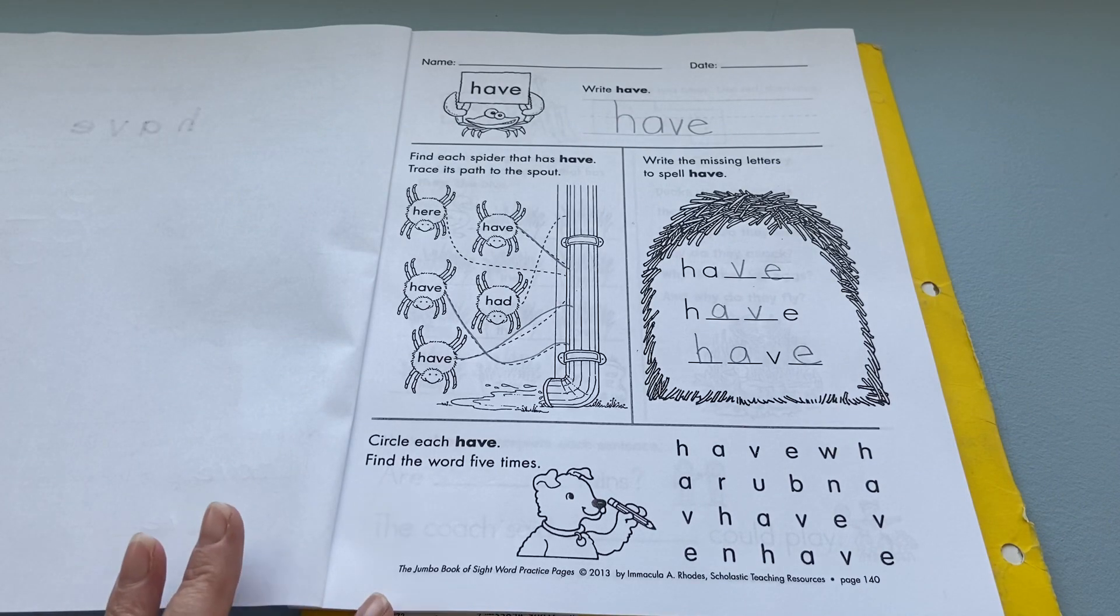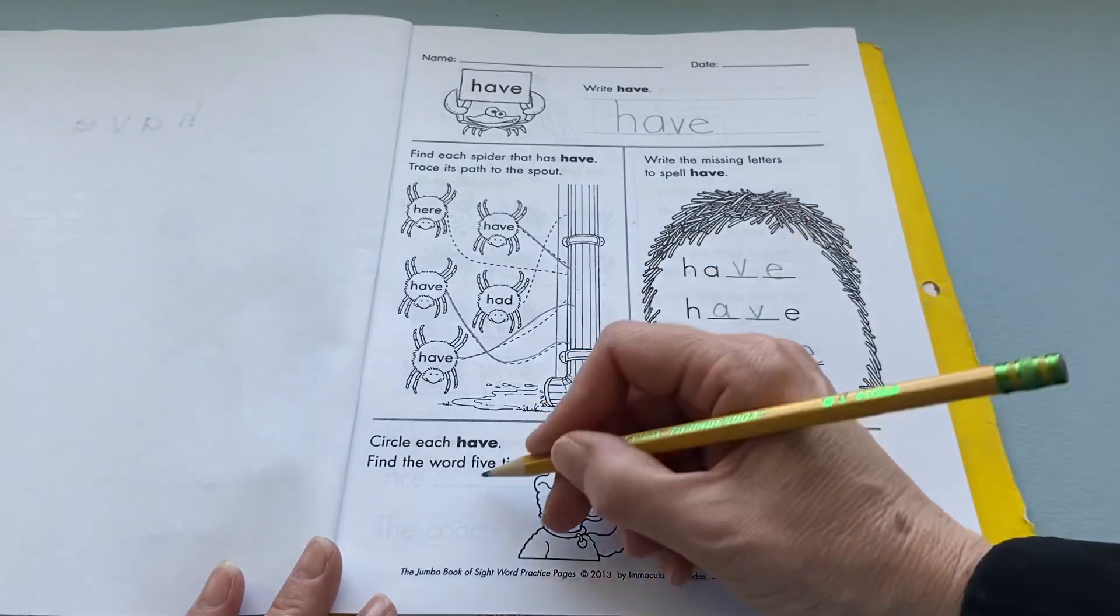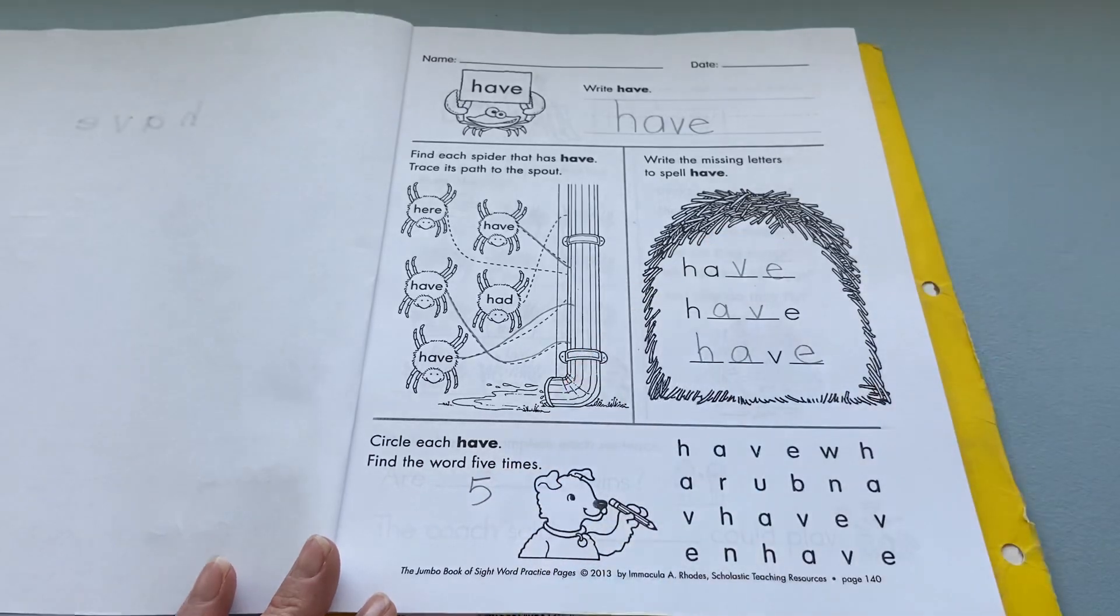We're going to spell it and then at the bottom one more. And then down at the bottom you're going to find the word five times.